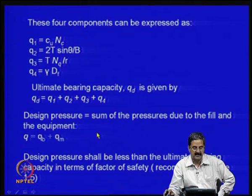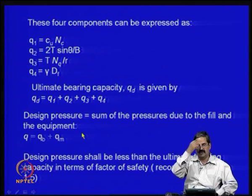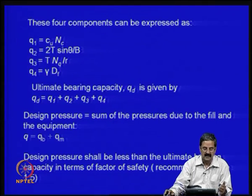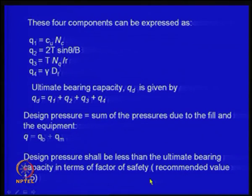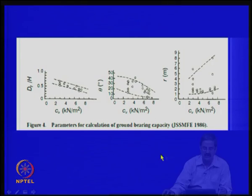The design pressure should be equal to the sum of pressures due to the fill and equipment — the total load Q_B plus Q_M due to backfill and machinery. The design pressure should be less than the ultimate bearing capacity divided by the factor of safety. Japanese society for soil mechanics and foundation engineering guidelines give parameters for bearing capacity calculations.